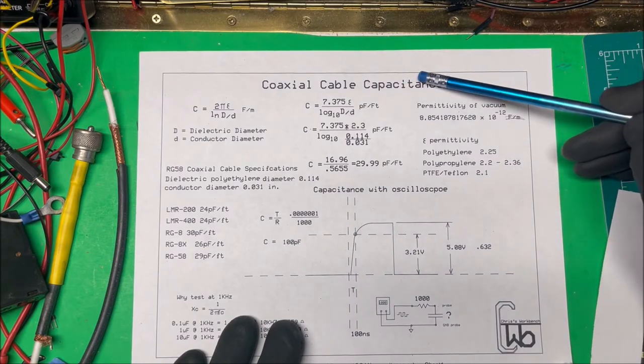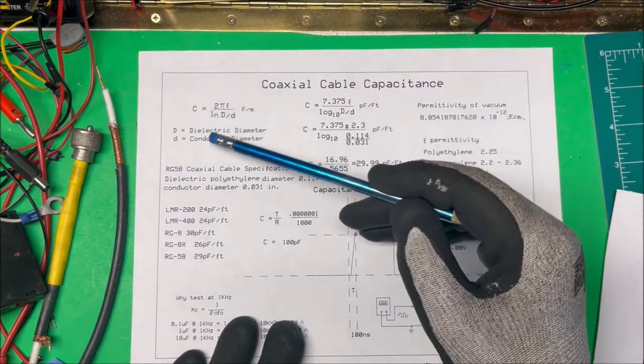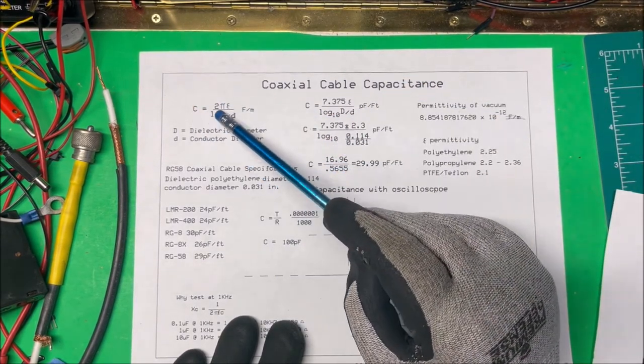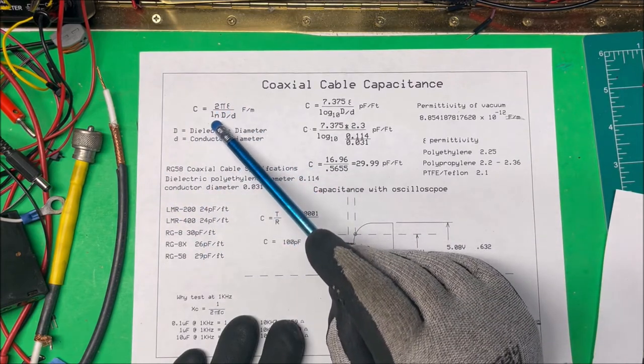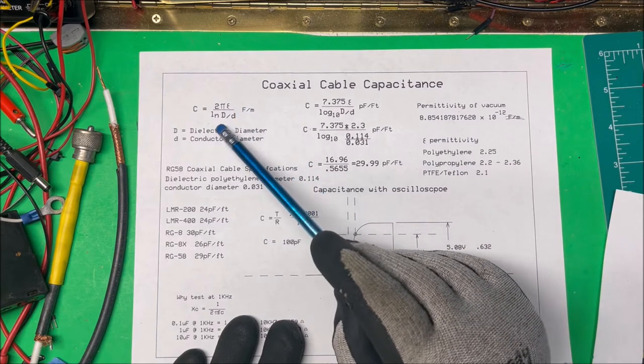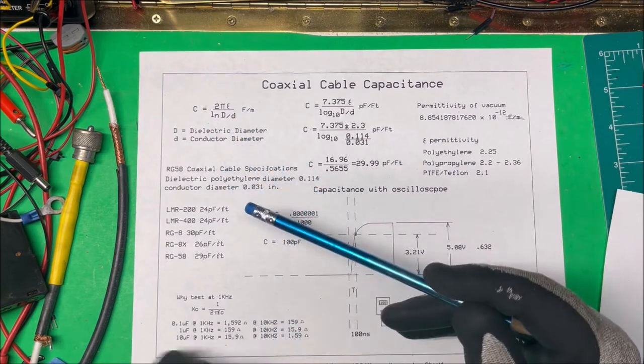Let's take a look at coaxial cable capacitance. The formula to calculate the capacitance is that capacitance equals 2 pi times permittivity divided by your natural log of the dielectric diameter divided by the conductor diameter.